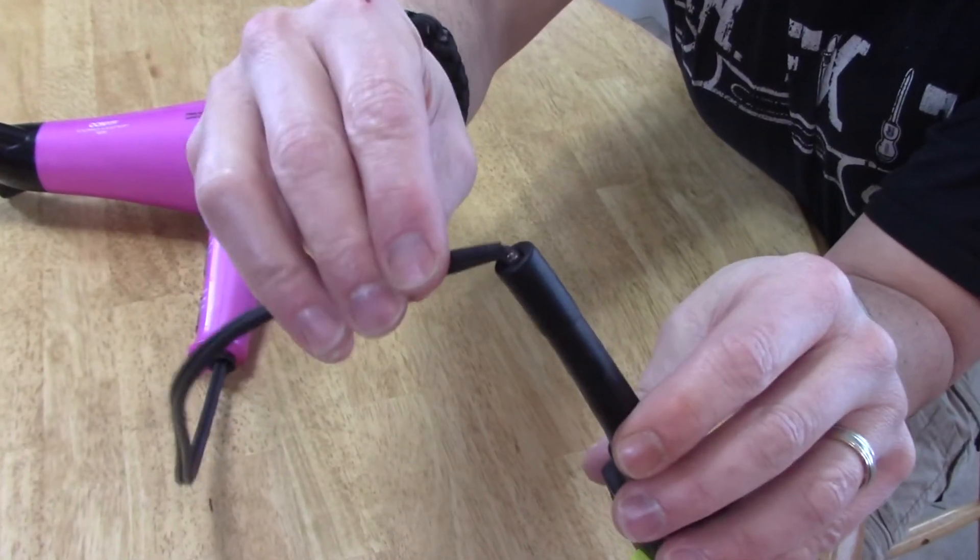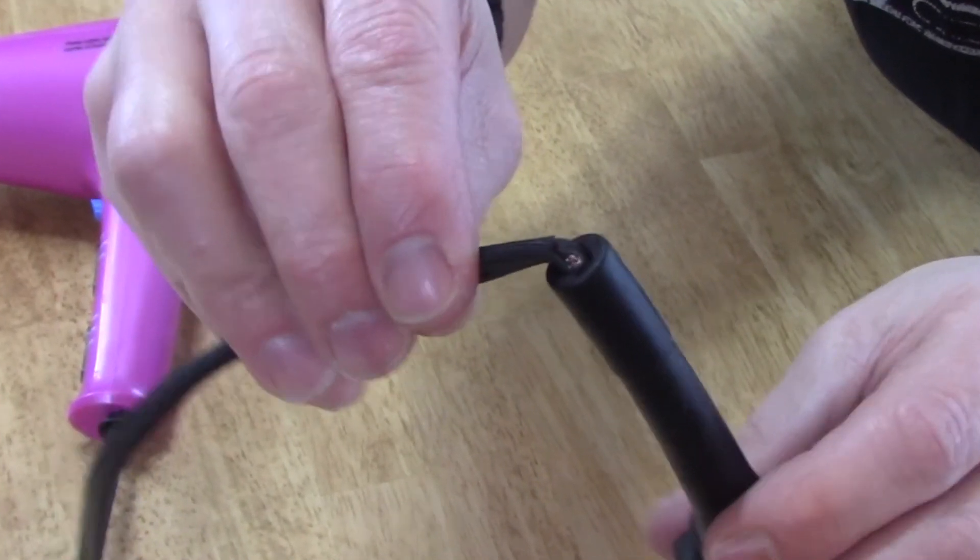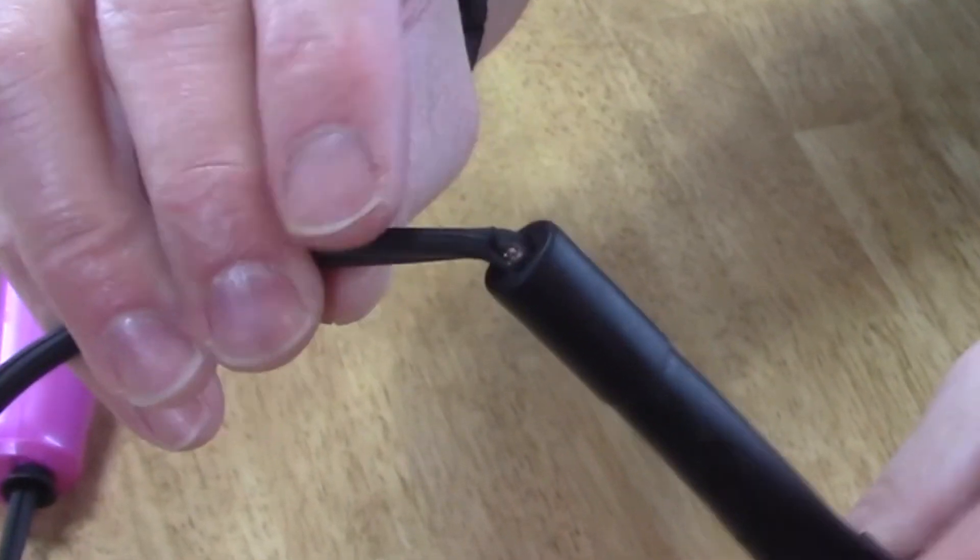This is pretty obvious what's going on here. Just the cord from bending back and forth eventually broke through. So all we're going to have to do is splice these wires.